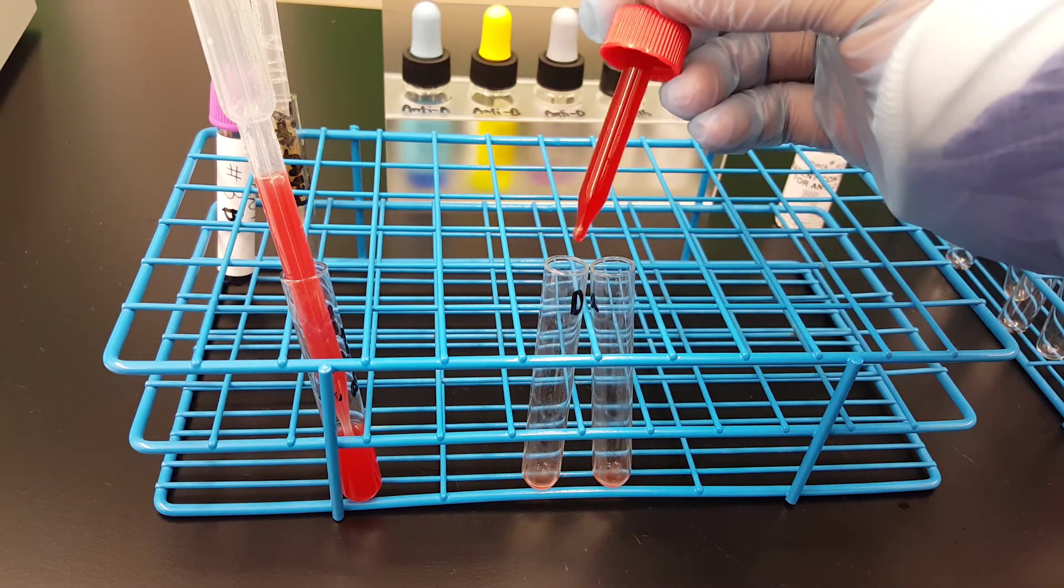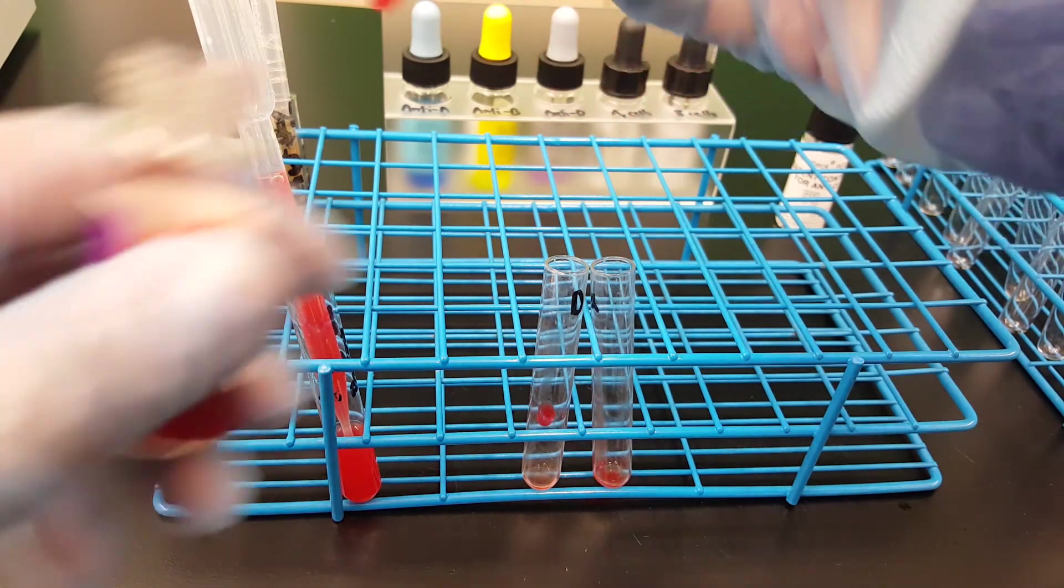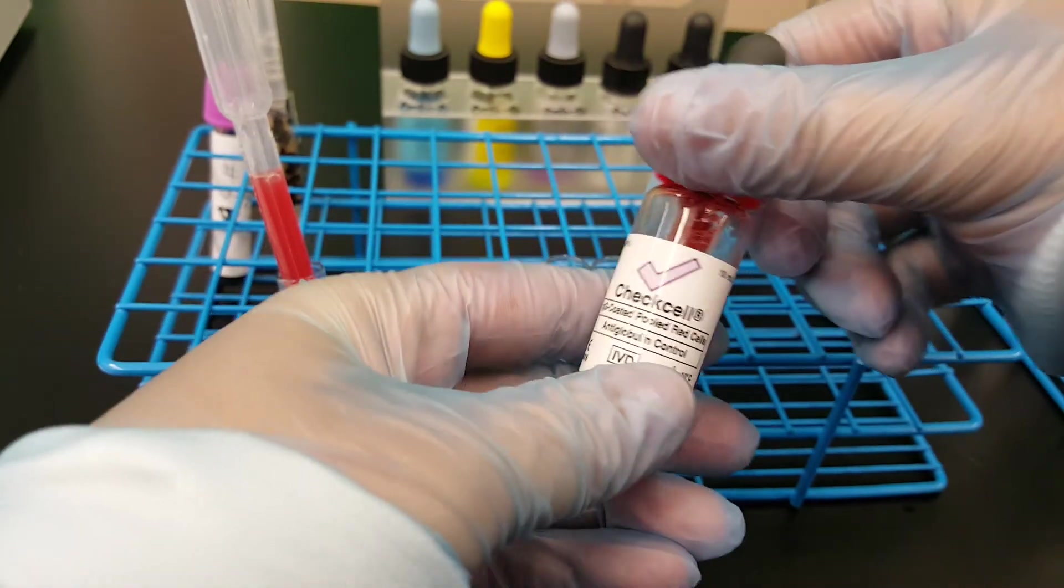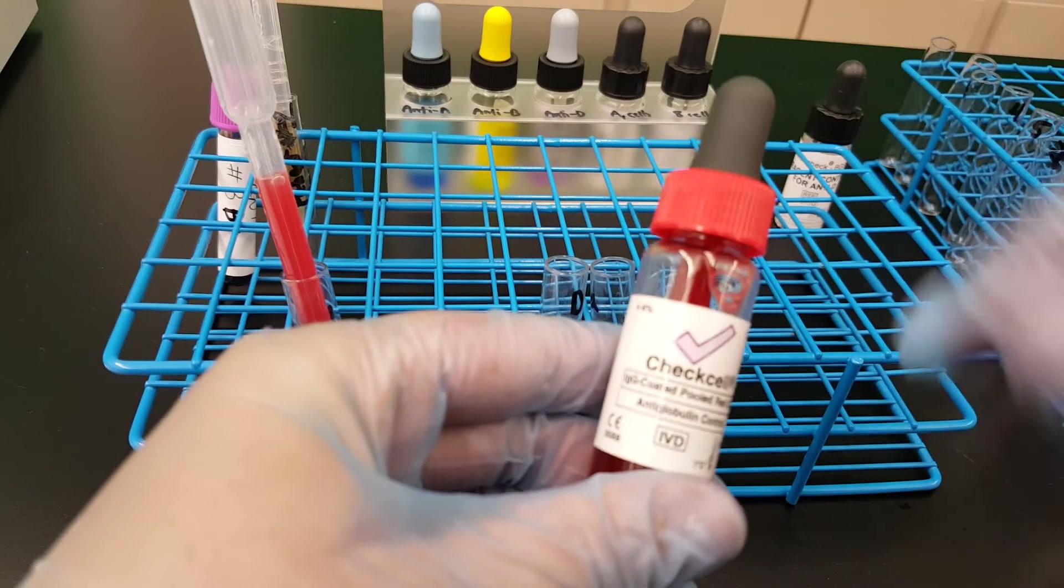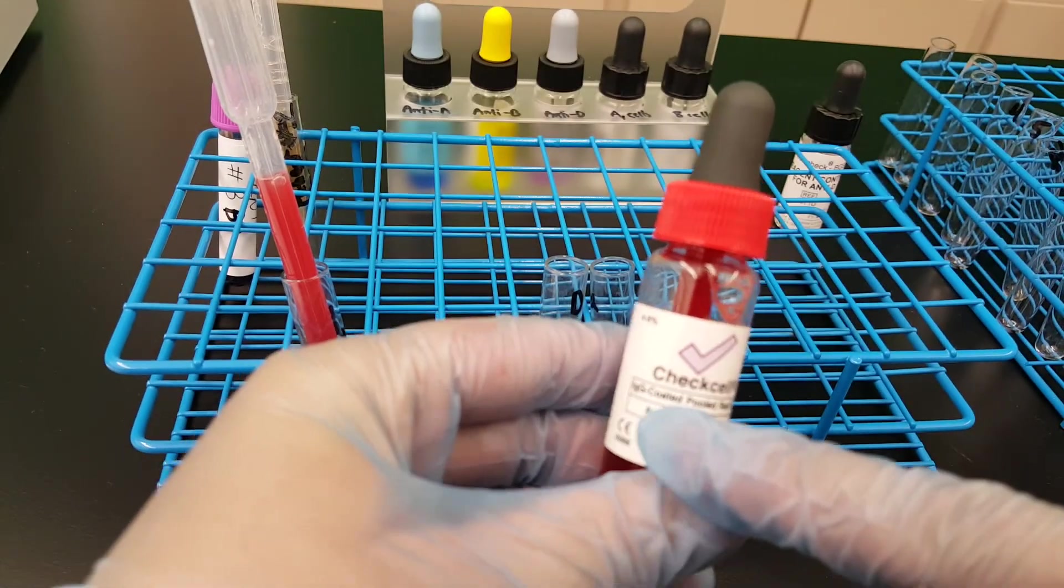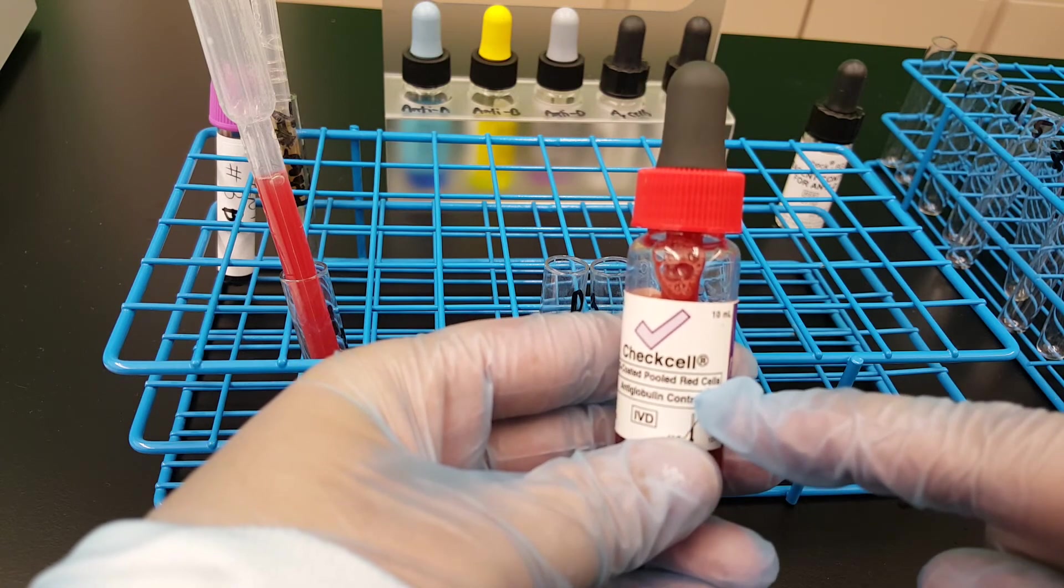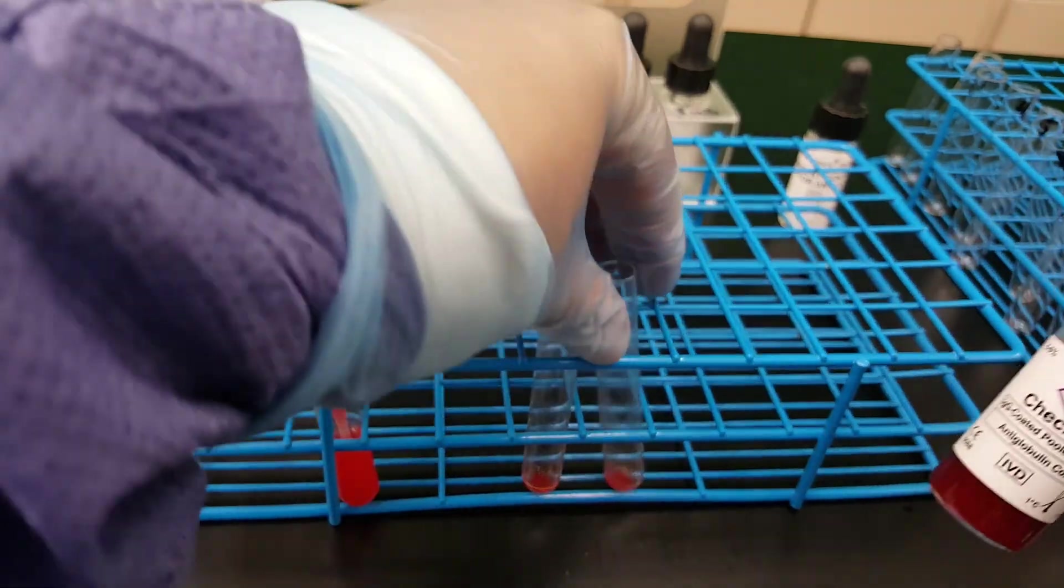So I mixed up my reagent. And then I'm going to add a drop of each of those into each of those. And then we're going to spin them for 15 seconds. These are the check cells. They're also known as Coombs control and see it's IgG coated pooled RBCs. So that means if the reagent still is...